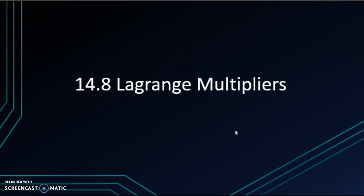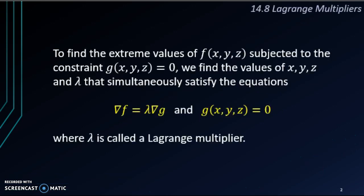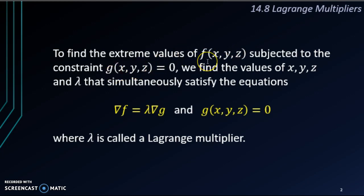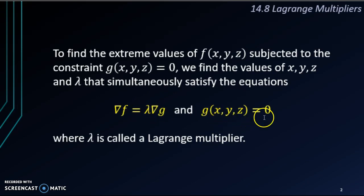In section 14.8, we are going to learn to use Lagrange multipliers. The Lagrange multiplier is a method for us to find the extreme values of f subjected to the constraint g equals to 0. The variables involved could be 2 or 3 variables, but the important thing is that both f and g have the same number of variables. Lambda is what we call the Lagrange multiplier.